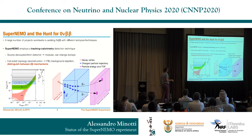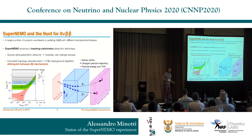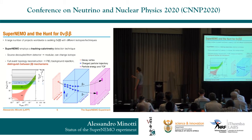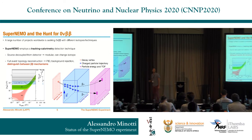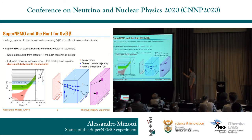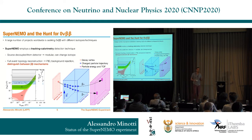This approach has advantages: the fact that the source is separate from the detector allows you, in principle, to test different isotopes at the same time, as was done in NEMO3. Also, the fact that you can access the full kinematics of the event allows you to reject background, perform background identification, and in principle distinguish different mechanisms behind the interaction.